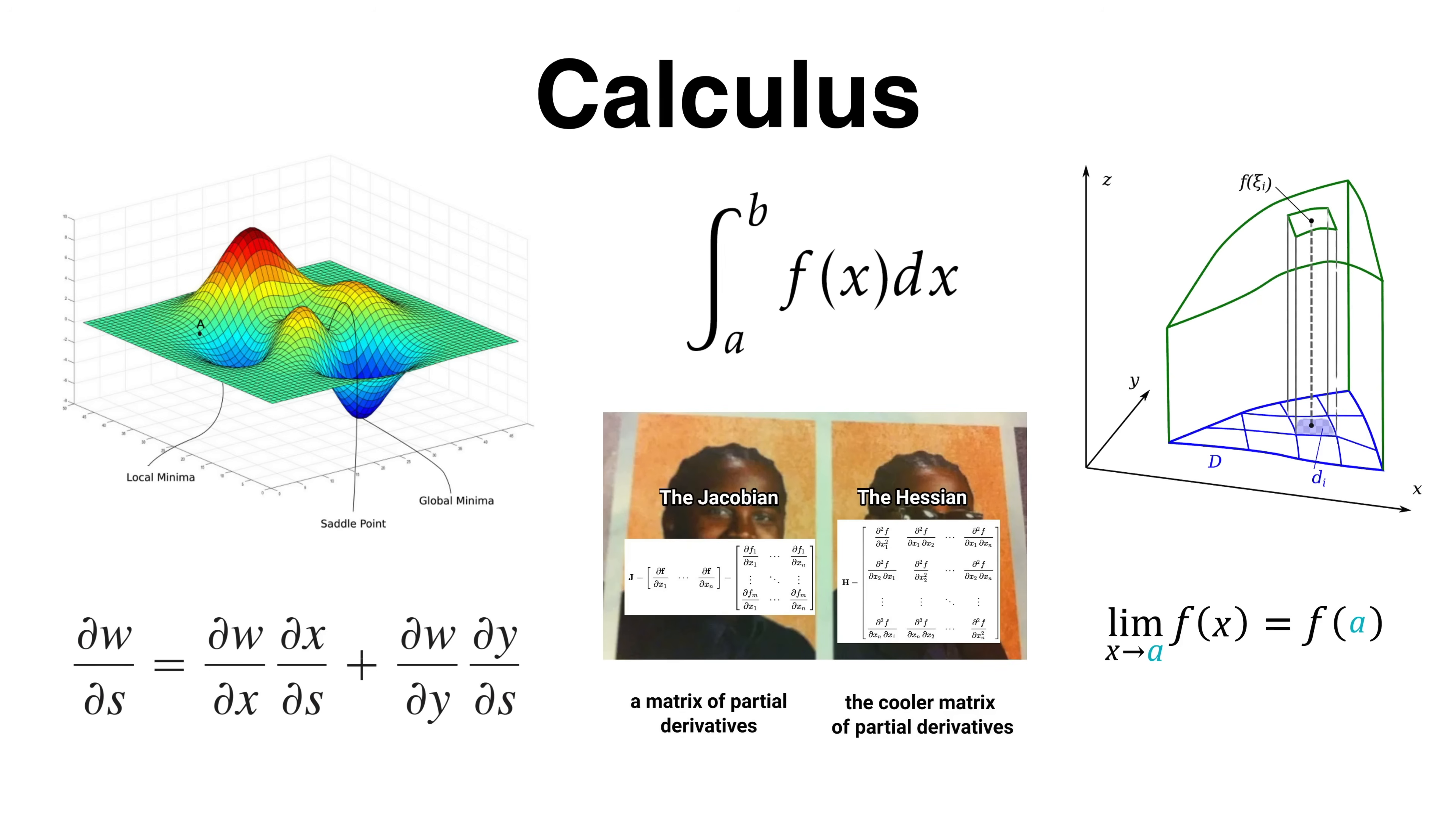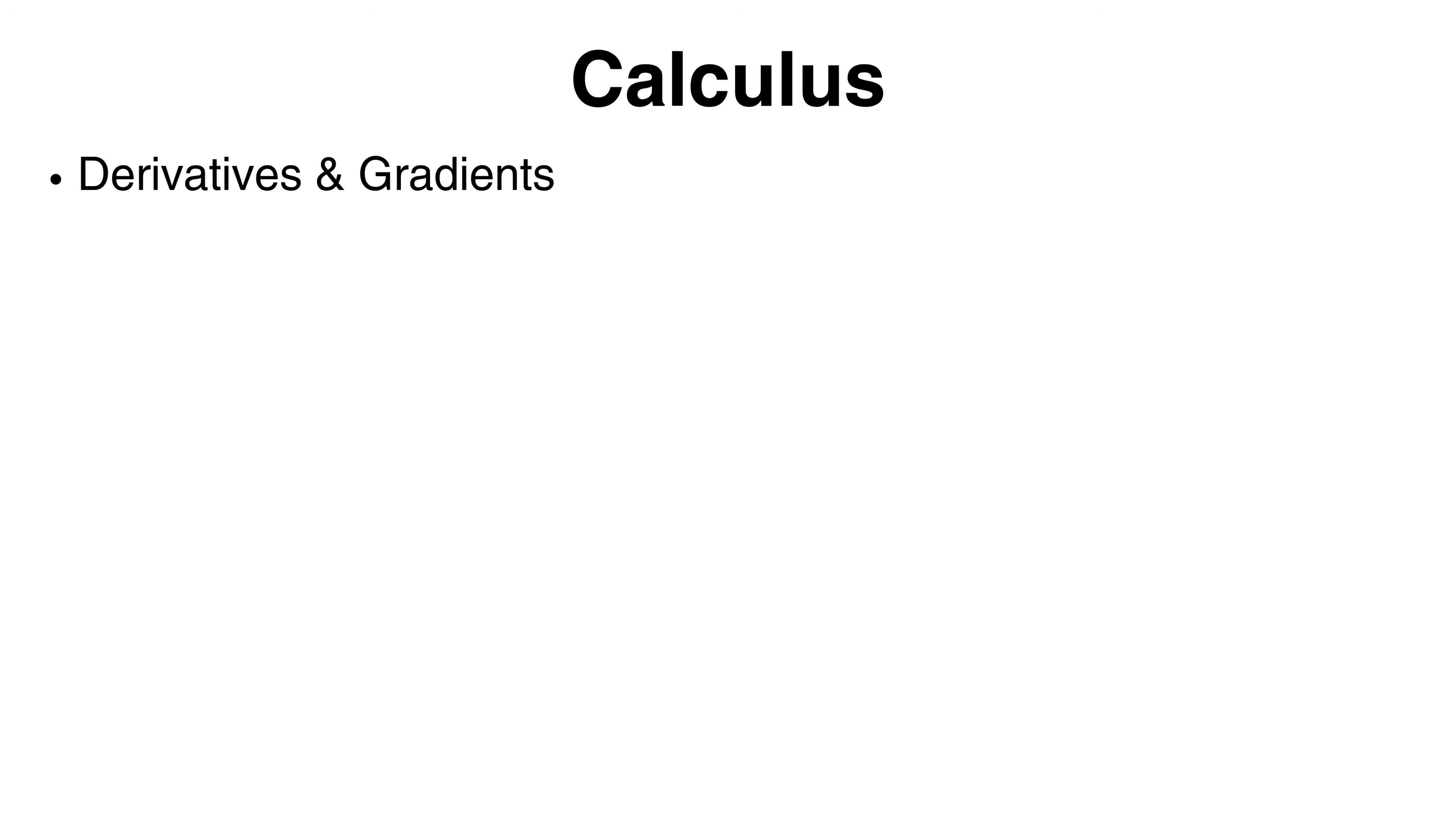Firstly, derivatives and gradients. Derivatives tell us how a function changes, and gradients extend this idea into multiple dimensions. These are essential for then understanding how algorithms like gradient descent adjust model parameters to reduce error and improve performance.